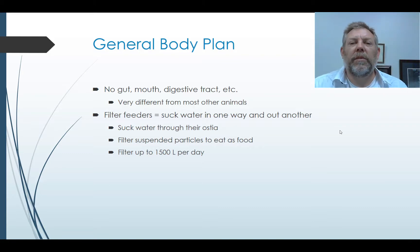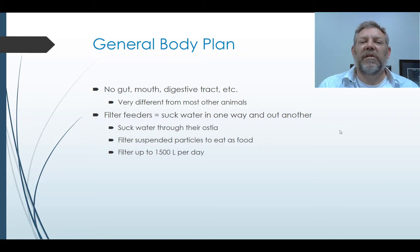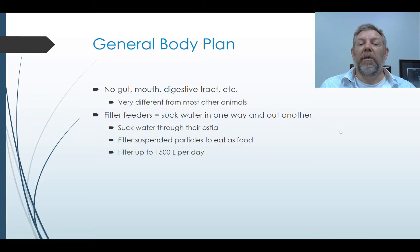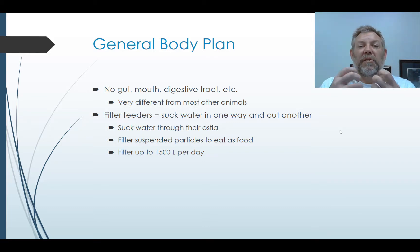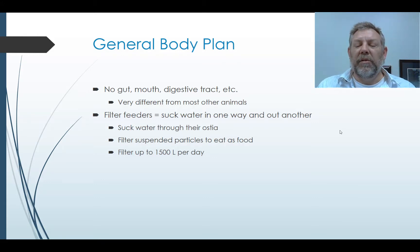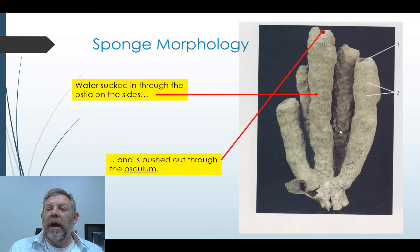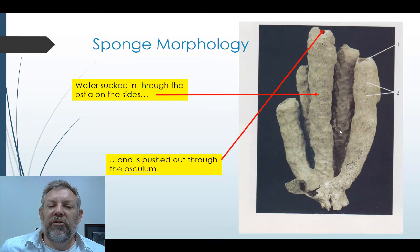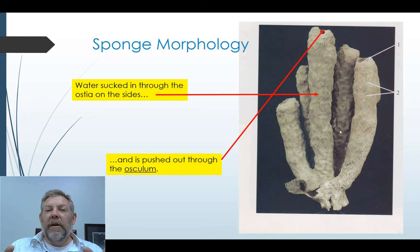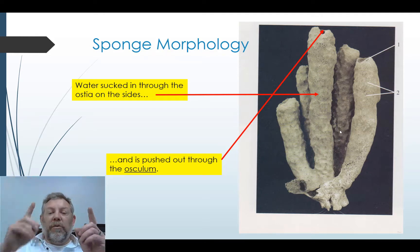Sponges have a unique way of feeding called filter feeding. Basically, they suck water in through those pores, and there's a filter — as the water goes through, small particles are retained and then the water is expelled out. Those food particles are absorbed into the cells. Sponges are notorious for being able to filter tremendous amounts of water per day — 1,500 liters per day in some of the big sponges. The ostia pores are on the sides, water gets sucked in and expelled out through the top, which is called an osculum.